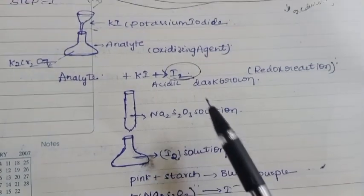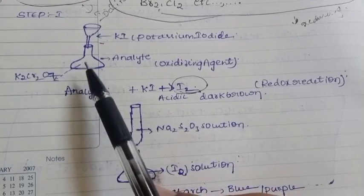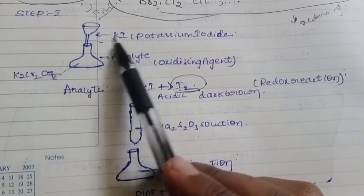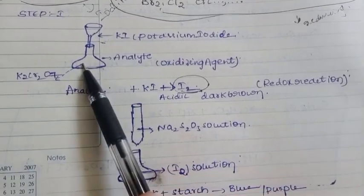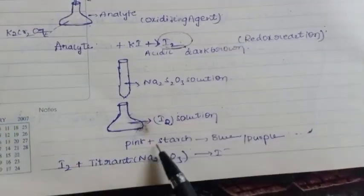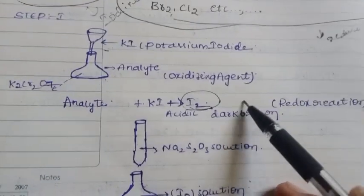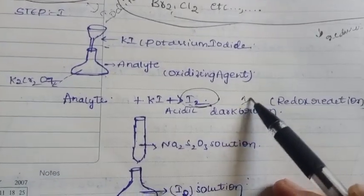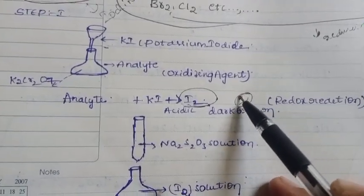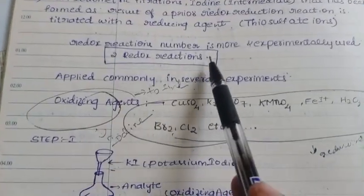The dark brown color is due to the potassium iodide reaction. In the second step, this is a reducing reaction. The iodine formed in the first step is then titrated indirectly — this is the indirect step of iodometry.